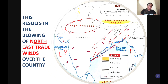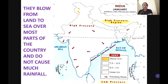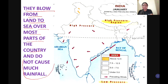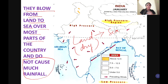This is why in winters, northeast winds start blowing, and we call them the Northeast monsoon. These winds blow from land to sea over most parts of the country and do not cause much rainfall because they are dry winds. Winds that blow from sea to land are moisture-laden, but winds that blow from land to sea do not carry much moisture — that's why they are dry.